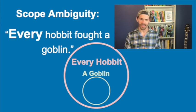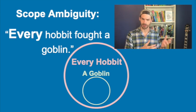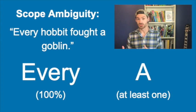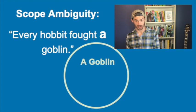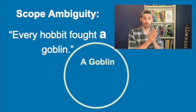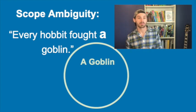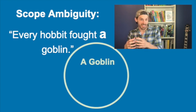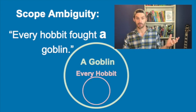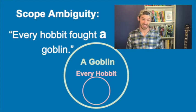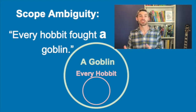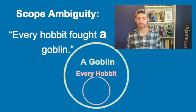So what happens if the word "a" has a bigger scope than "every"? The word "a" is used to tell us that at least one individual exists. So if "a" has a bigger scope, we first recognize that there's one goblin, and then we recognize that this individual goblin is being fought by every hobbit. These circles can clear up the ambiguity of the sentence, but we don't pronounce circles when we're speaking. Without them, we just don't know which quantifier has the bigger scope — that's why the sentence is ambiguous.